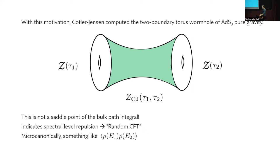So with this motivation, Kotler and Jensen computed the two boundary torus wormhole in AdS3 pure gravity. The somewhat mysterious computation, certainly unfamiliar because it's not a saddle point. And there was some indication of some level of repulsion in the dual CFT spectrum. They coined this term random CFT to describe what they seem to be observing as phenomenological features of their answer, which was something like random matrix theory. I mentioned the level of repulsion. It seems to be computing something like a density two-point correlator in microcanonical language.